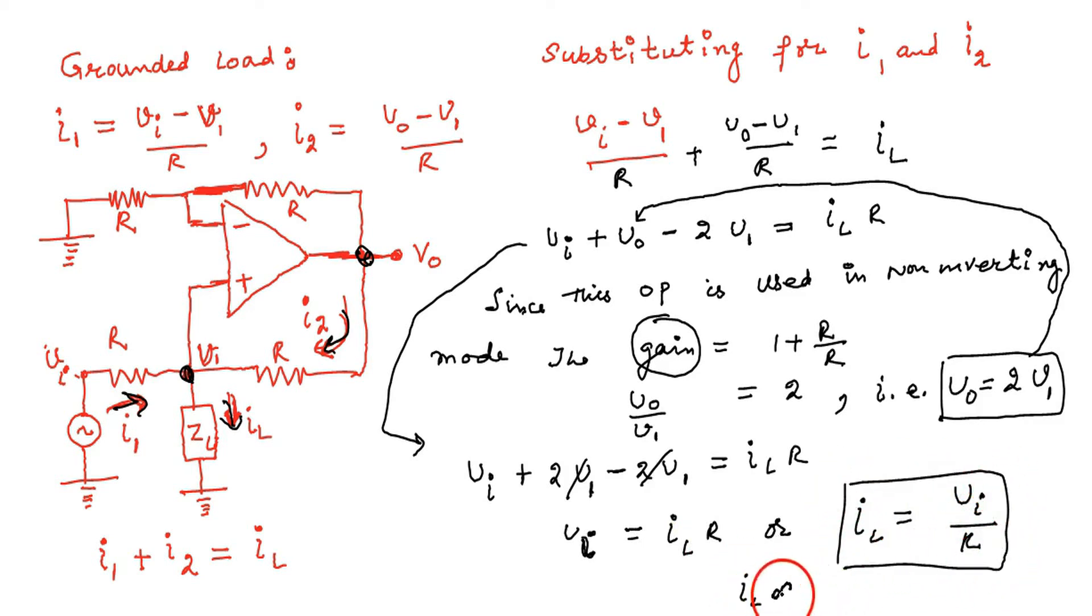Again, current is proportional to the voltage. Voltage is applied at the non-inverting terminal, which is VI. And we are getting the current to the load which is IL. The current which we are getting, it is proportional to the voltage which is applied.